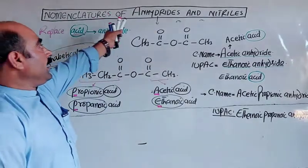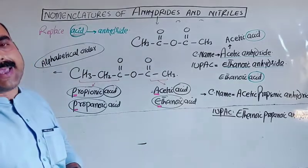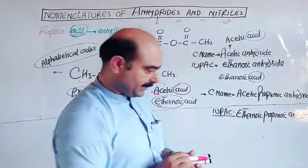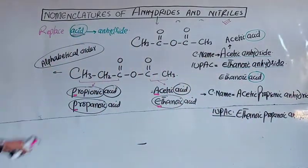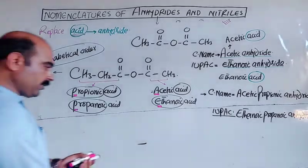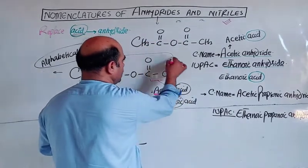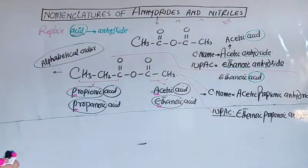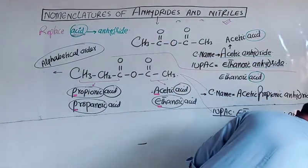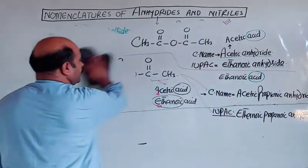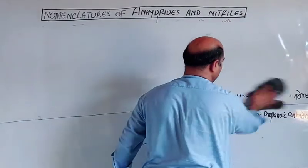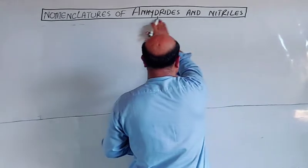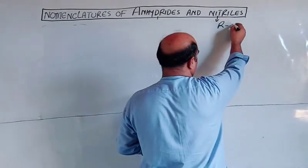These were all about the common names and IUPAC names of anhydrides, which are derivatives of carboxylic acids. The other derivatives are nitriles, also called cyanides. Nitriles are also derivatives of carboxylic acids, and their general formula is R-CN.